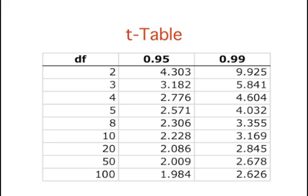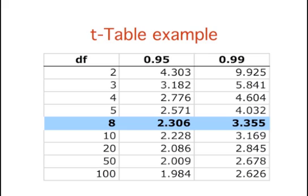The values of t to be used in a confidence interval can be found using the inverse t-distribution calculator, or can be looked up in a table of the t-distribution. A small version of a t-table is shown here. The first column, df, stands for degrees of freedom, and for confidence intervals on the mean, is equal to n minus 1, where n is the sample size. For example, the t for a 99% confidence interval based on 9 subjects would have 8 degrees of freedom and would be 3.355.